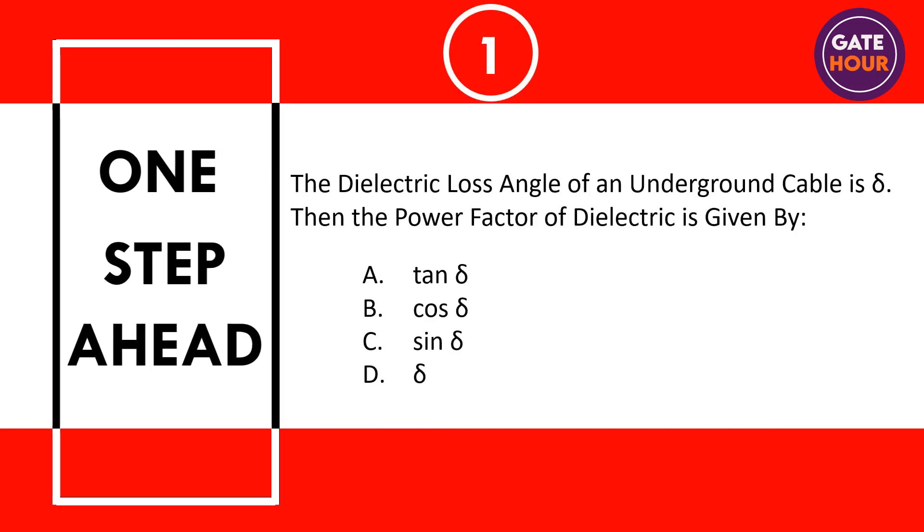The dielectric loss angle of an underground cable is delta. Then, which of the following gives the power factor of dielectric? Option A: tan delta. Option B: cosine delta. Option C: sin delta. Option D: delta.